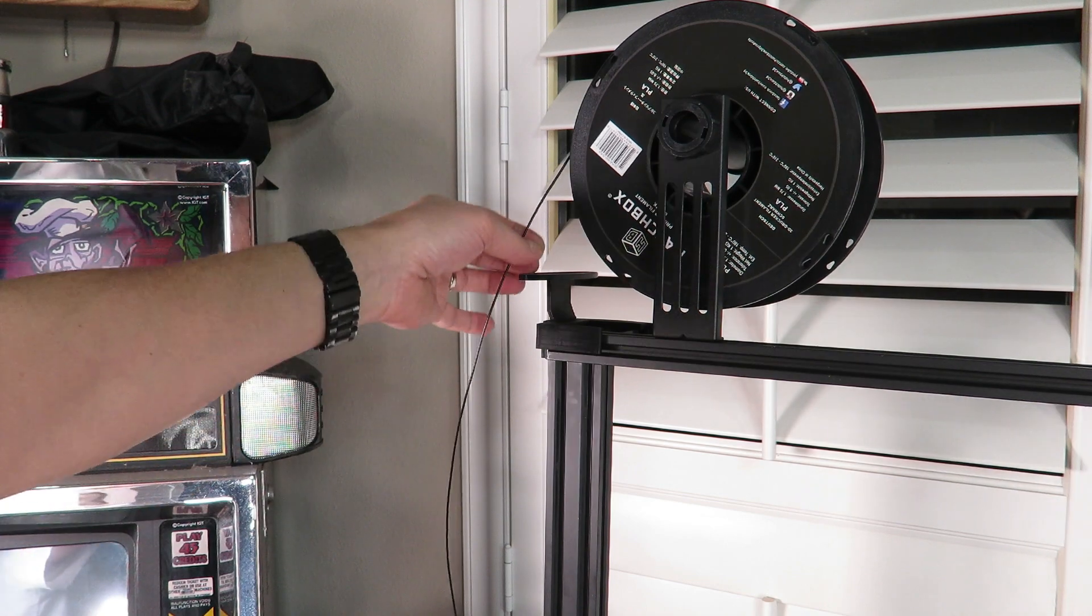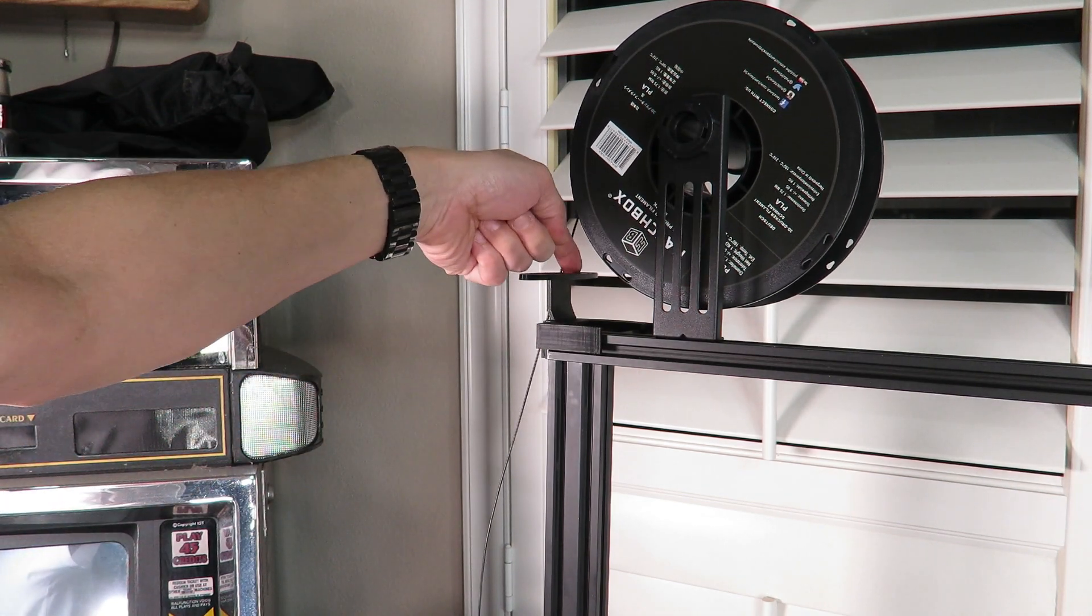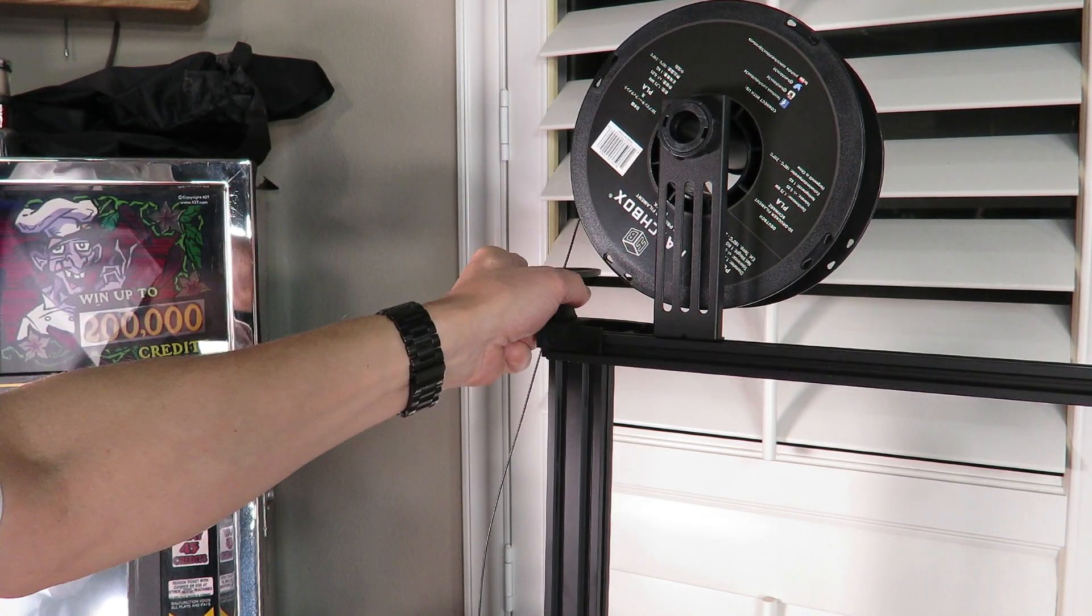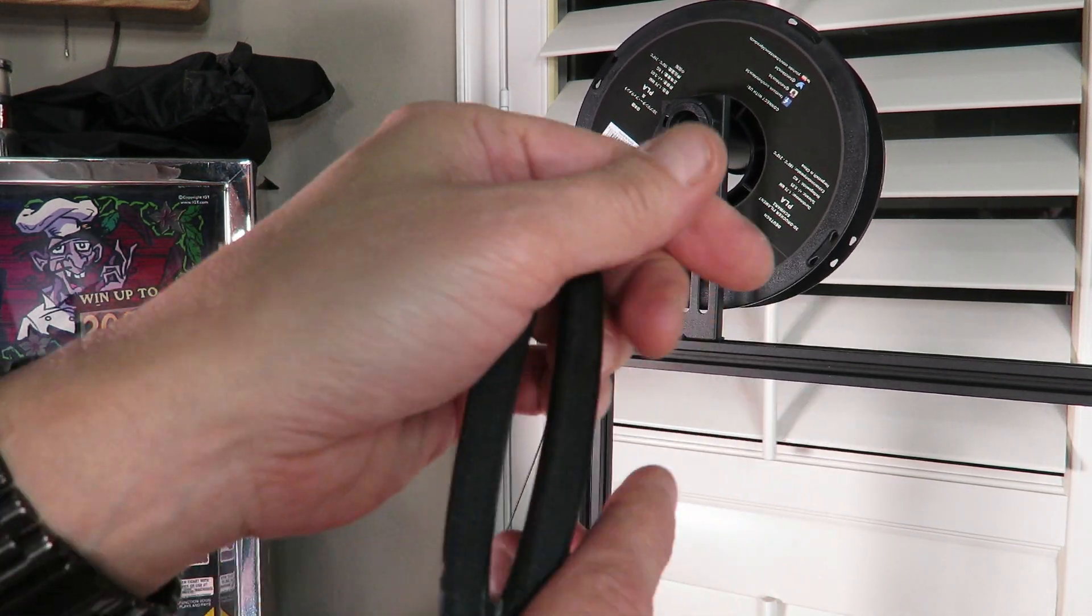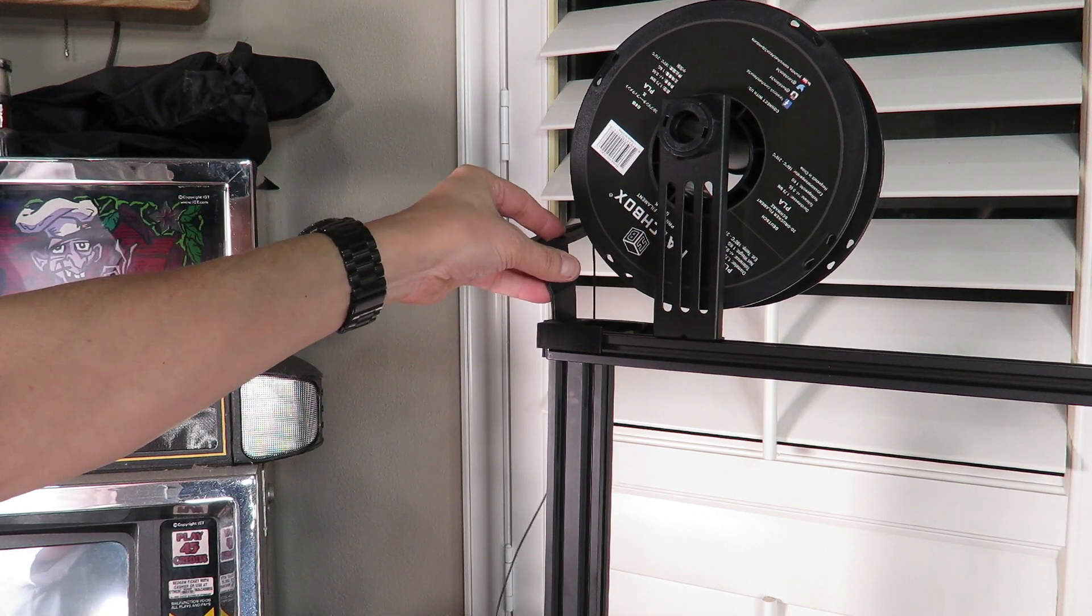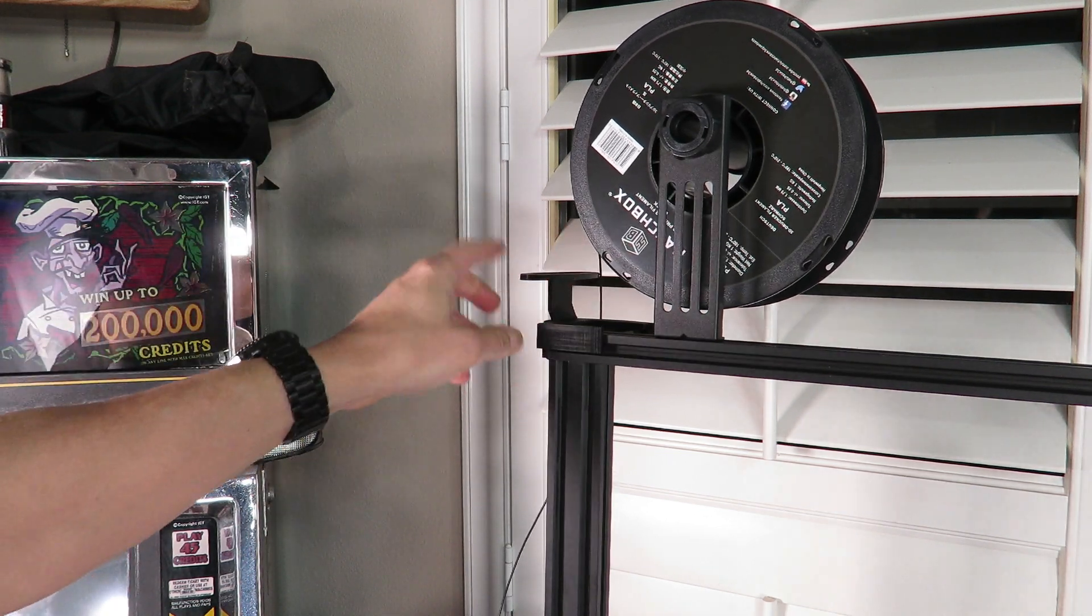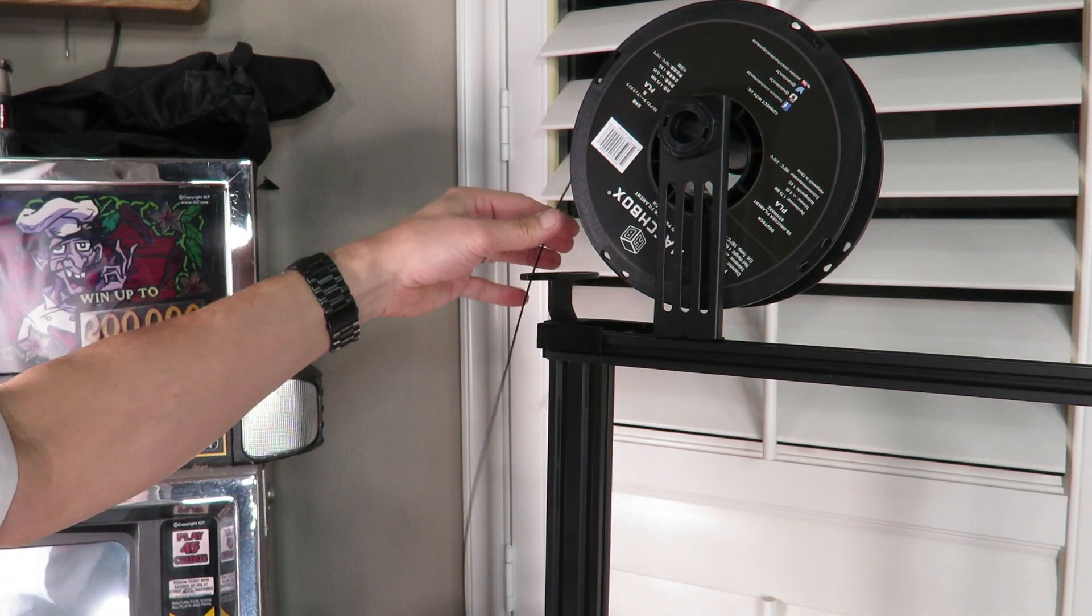Now when I retract my filament, I can lead it right down into the top of this channel. This can be removed in case you get some dust or fragments on here, and then easily slid right back into place like that.